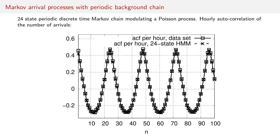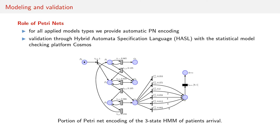We then considered Markov arrival processes with a periodic background chain, in particular a 24-state periodic discrete-time Markov chain that is modulating a Poisson process. The figure showing the hourly autocorrelation function of the number of arrivals illustrates the fact that this model is able to reproduce the periodicity of the dataset.